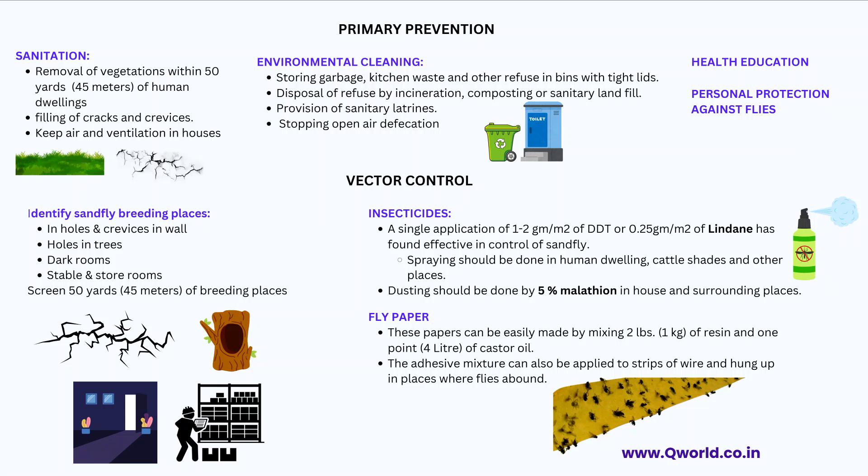For vector control, identify sandfly breeding sites — these are typically holes or crevices in walls, holes in trees, and dark rooms or storerooms. Screen a 50-yard (45-meter) radius around these breeding places. Spray insecticides such as lindane or 5% malathion — 5% malathion dusting inside houses and surrounding places should be done. Spraying in human dwellings, cattle sheds, and other places is also recommended. Fly papers can be made by mixing 1 kg of resin and 4 litres of castor oil, applied on strips and hung where flies are commonly found.